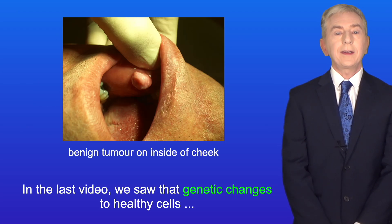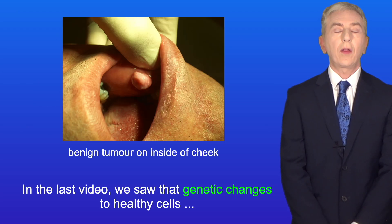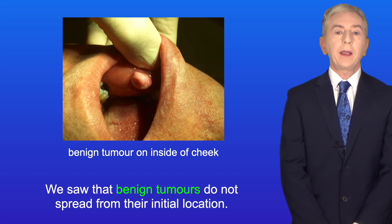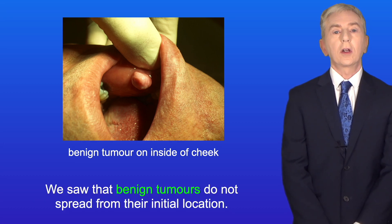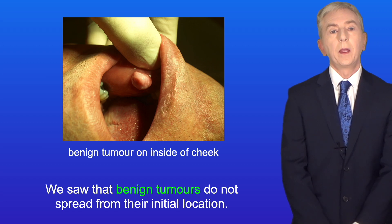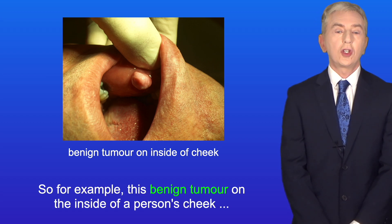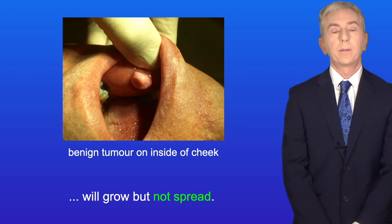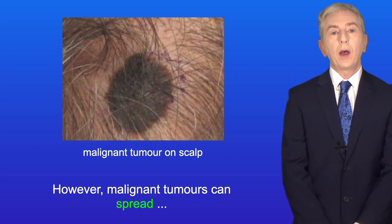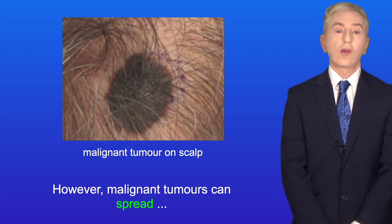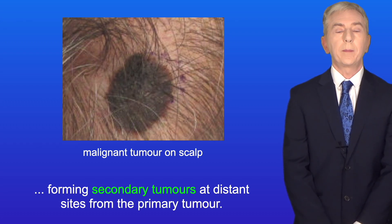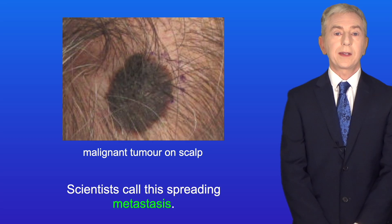In the last video, we saw that genetic changes to healthy cells can lead to the formation of a tumour. Benign tumours do not spread from their initial location — for example, a benign tumour on the inside of a person's cheek will grow but not spread. However, malignant tumours can spread, forming secondary tumours at distant sites from the primary tumour. Scientists call this spreading metastasis.